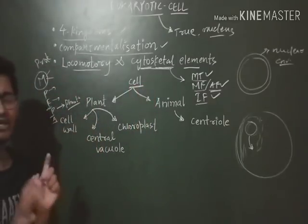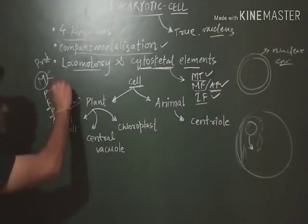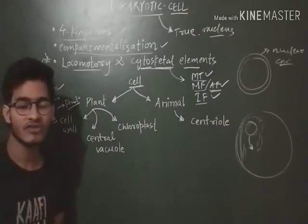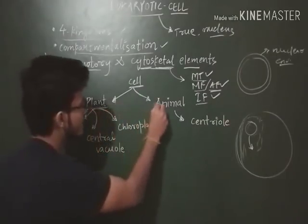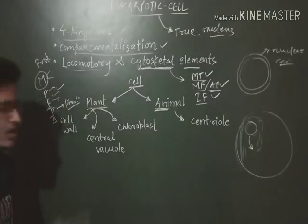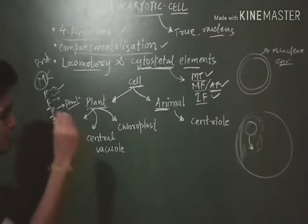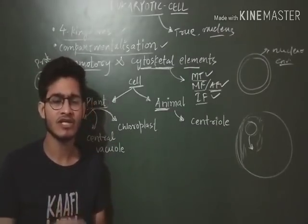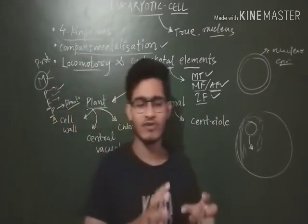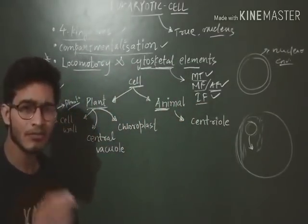The eukaryotic cell can be majorly divided into two classes. There are different kinds of cells — the cell of a protist, the cell of a fungus — but let's talk about the most complex cells: the plant cell and the animal cell. How do they differ, and what are their similarities? Most of the organelles and functions are exactly similar in plant and animal cells, except a few things.